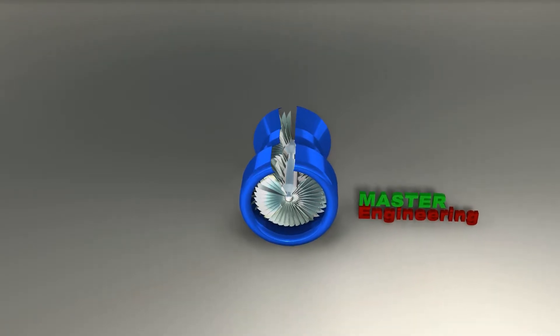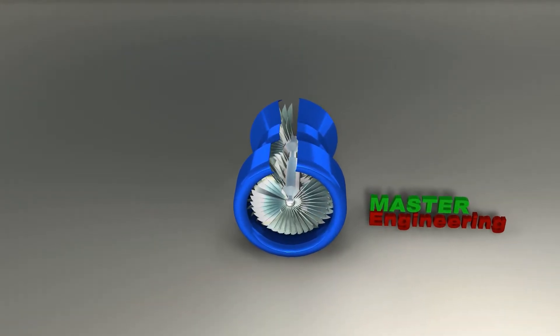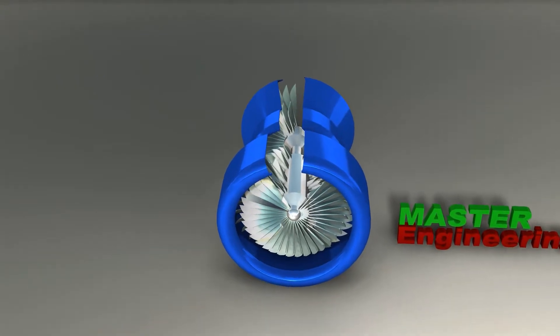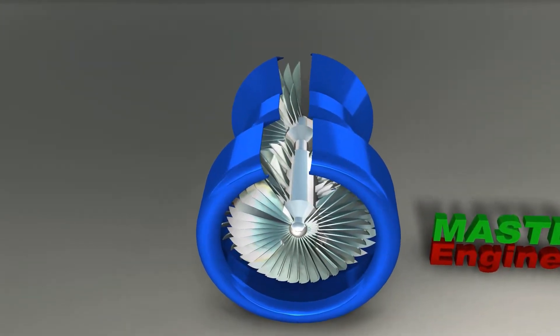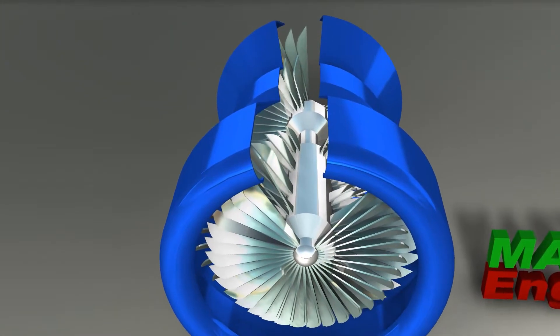Air is drawn into the engine through the inlet and compressed and heated by the compressor. Fuel is then added in the combustion chamber and ignited.